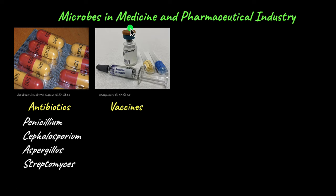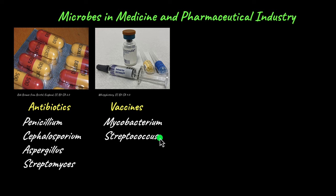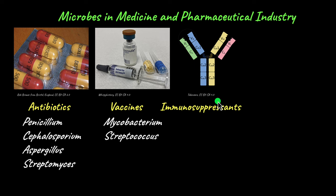Vaccines are another important component of the pharmaceutical industry. They contain an attenuated or weakened form of the pathogen that causes a disease. Pathogens like Mycobacterium and Streptococcus are used to produce vaccines; when these weakened bacteria enter our body, an immune response is triggered which remembers them and helps prevent future infections. Immunosuppressants are drugs given to transplant patients to prevent their immune system from rejecting the transplanted organ — even from a close relative. Many immunosuppressants are produced using microbes like Streptomyces and Trichoderma.